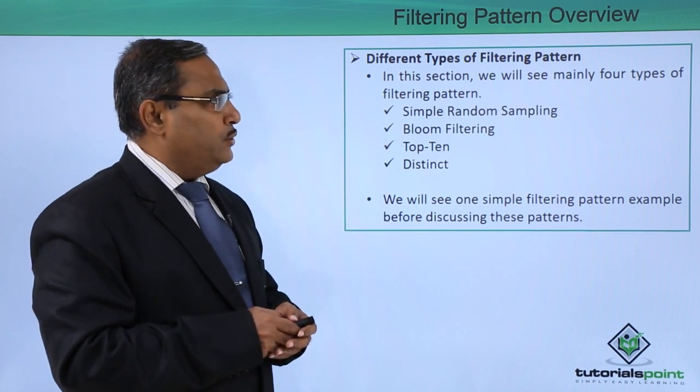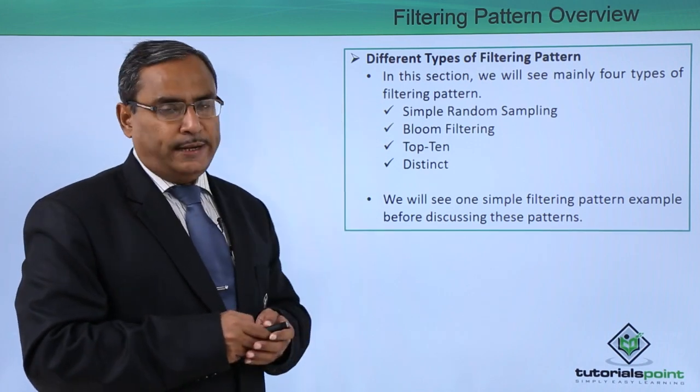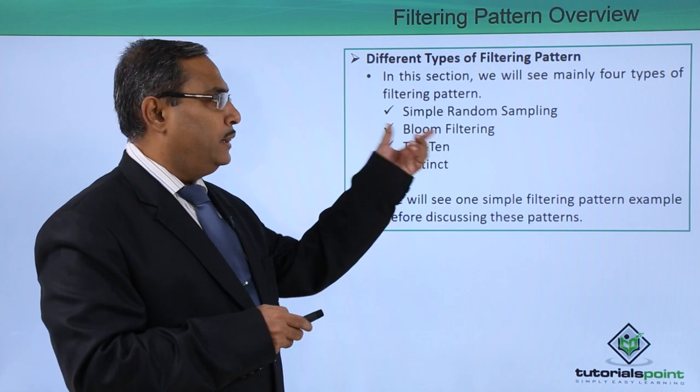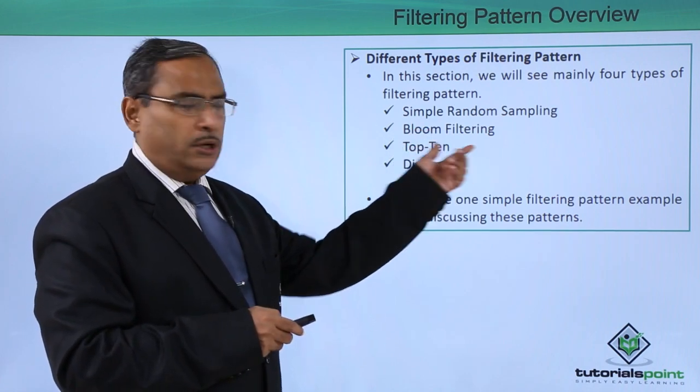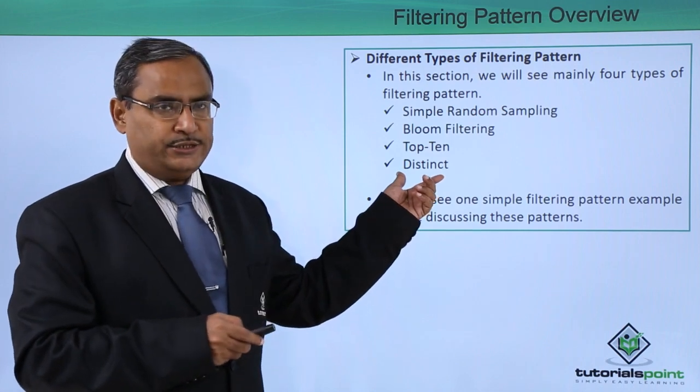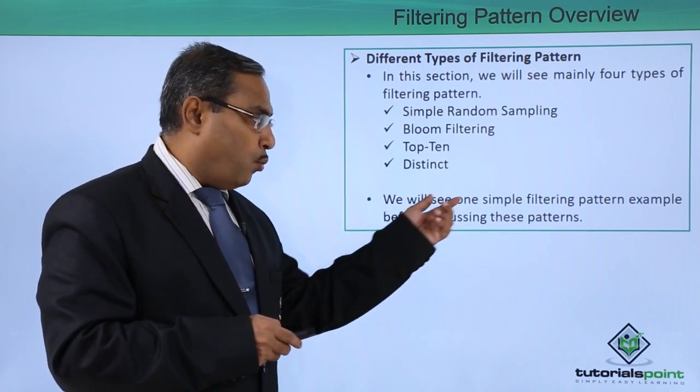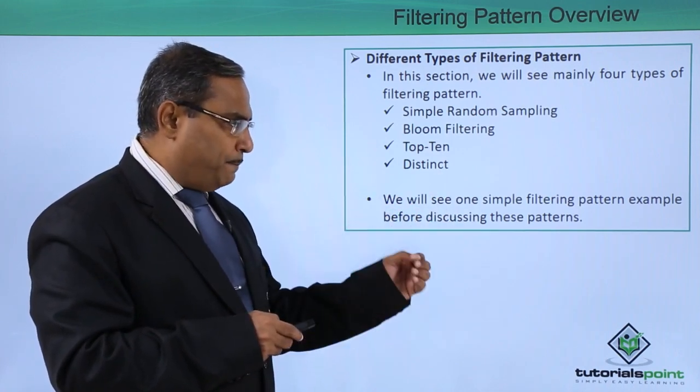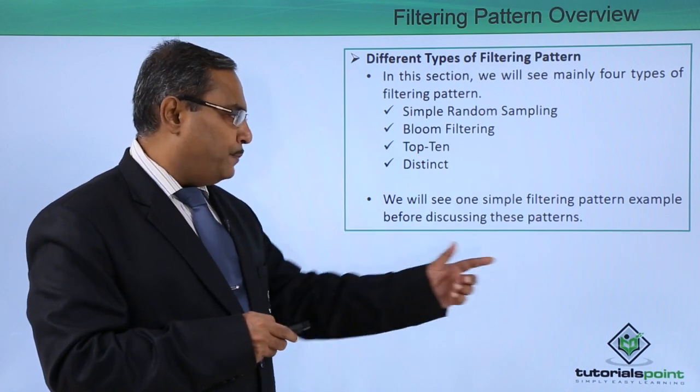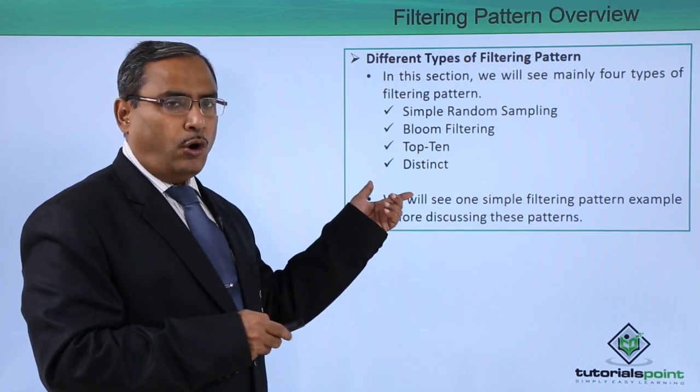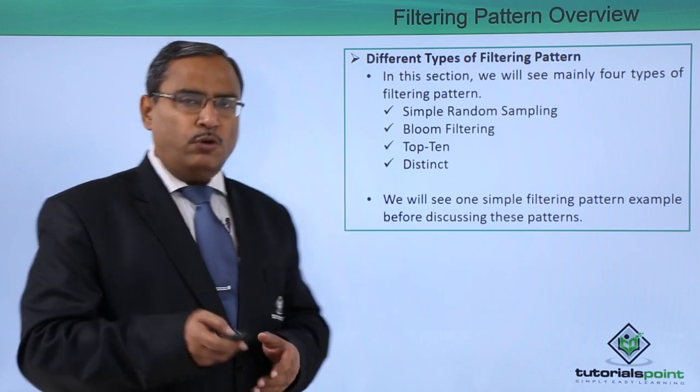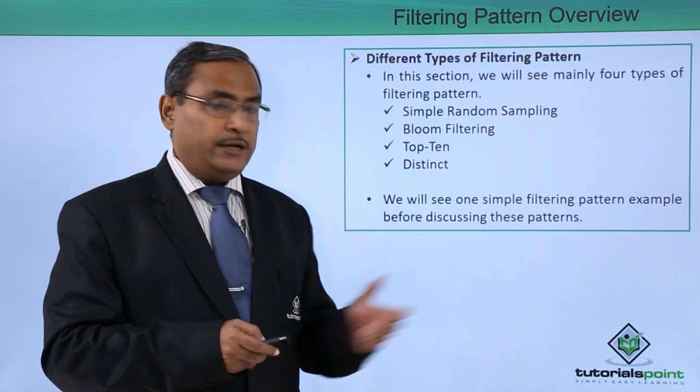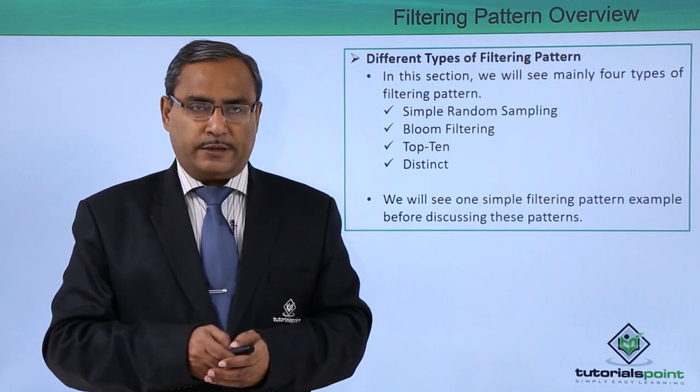In this section, we will see mainly four types of filtering pattern: simple random sampling, bloom filtering, top 10, and distinct. We will see one simple filtering pattern example before discussing these four different categories in detail. So let us go for the next videos for the implementation of this simple filtering pattern.